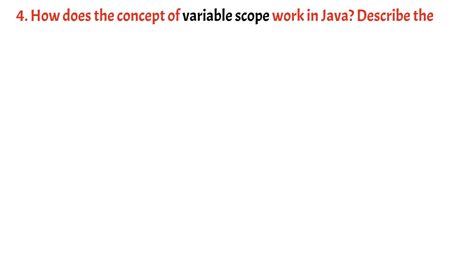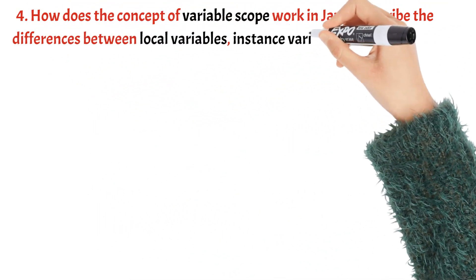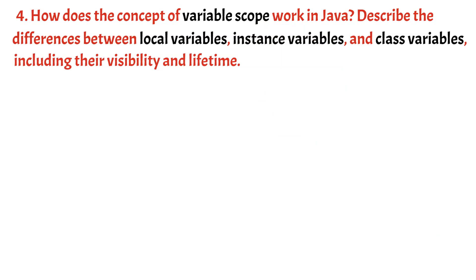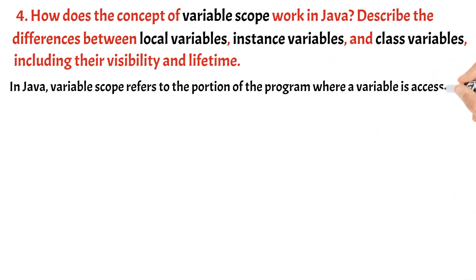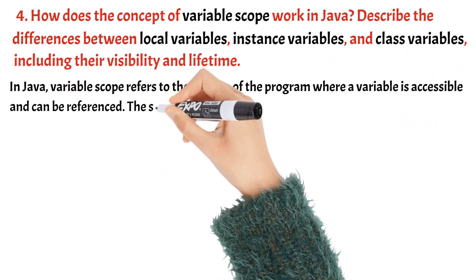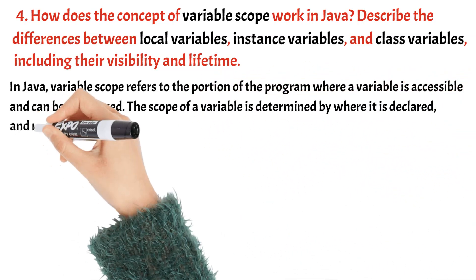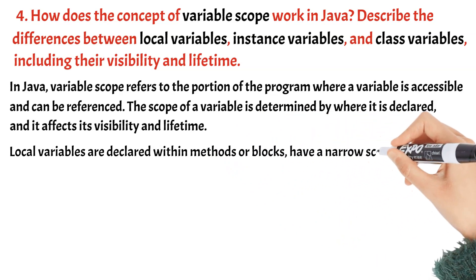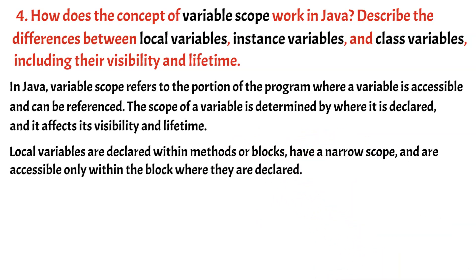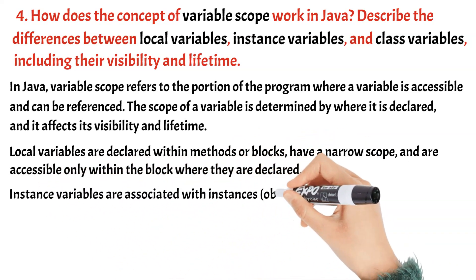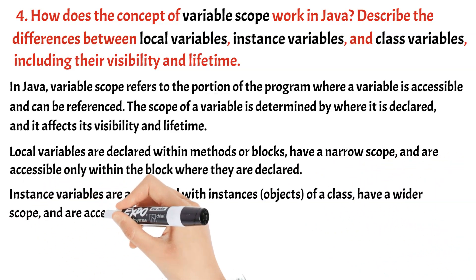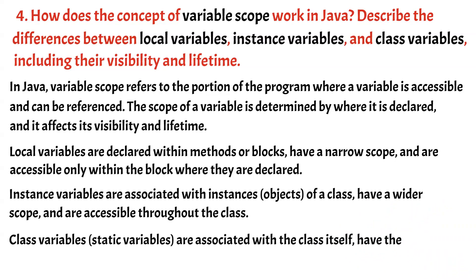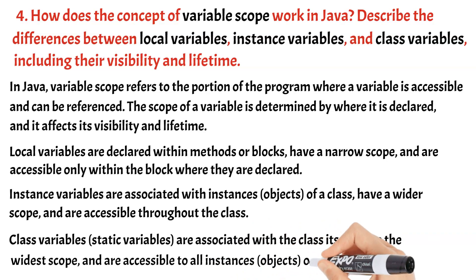How does the concept of variable scope work in Java? Describe the differences between local variables, instance variables, and class variables, including their visibility and lifetime. In Java, variable scope refers to the portion of the program where a variable is accessible and can be referenced. The scope of a variable is determined by where it is declared, and it affects its visibility and lifetime. Local variables are declared within methods or blocks, have a narrow scope, and are accessible only within the block where they are declared. Instance variables are associated with instances (objects) of a class, have a wider scope, and are accessible throughout the class. Class variables (static variables) are associated with the class itself, have the widest scope, and are accessible to all instances (objects) of the class.